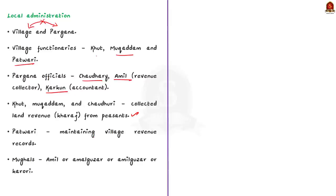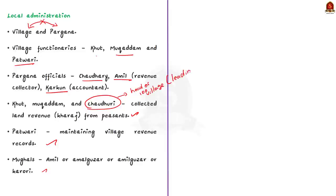The Patwari looked after the village revenue records. Amil was the revenue collector at the Pargana level, and Kirkon was the accountant at the Pargana level. According to historians, Chaudhary might not have been directly involved in the collection of revenue because he was also the head of 100 villages, that is the Pargana. In most cases, he was the leading zamindar of the locality, so collecting revenues was one of his duties.